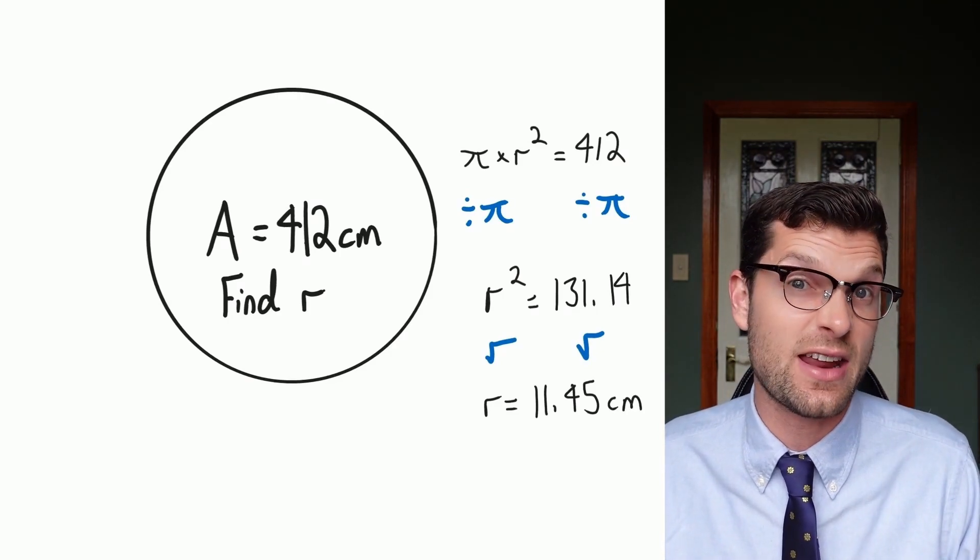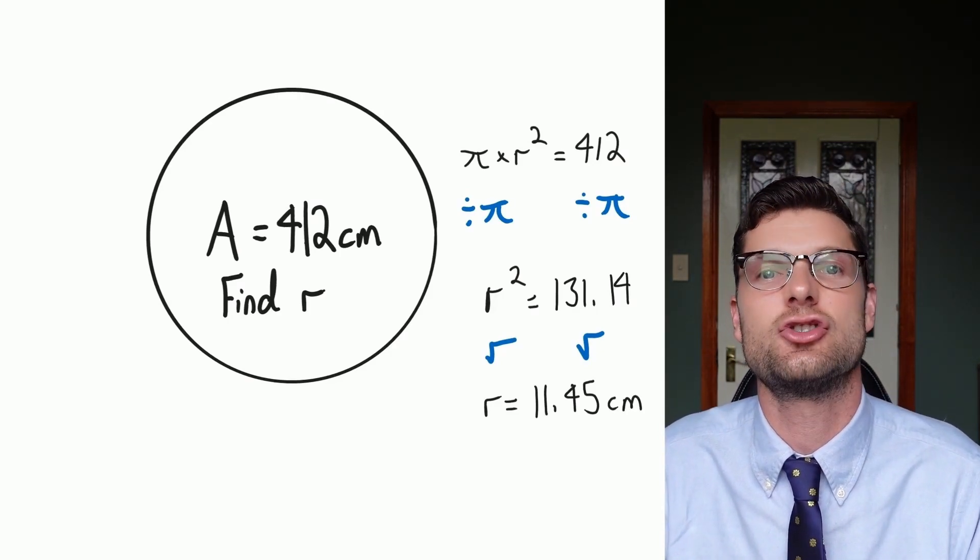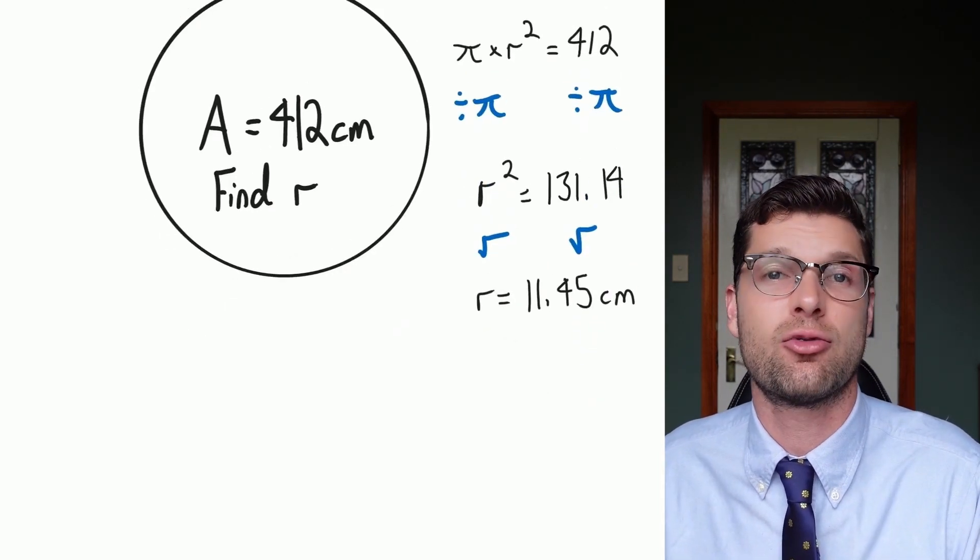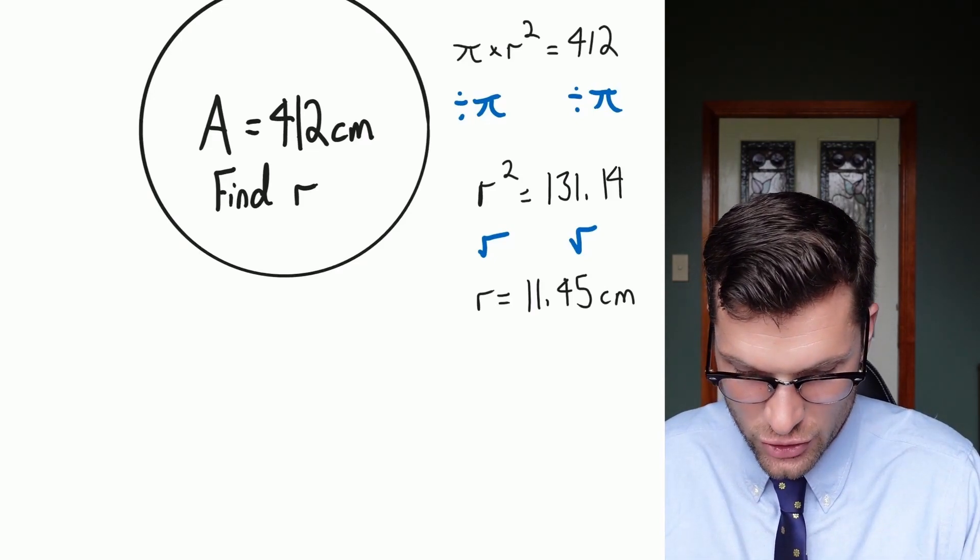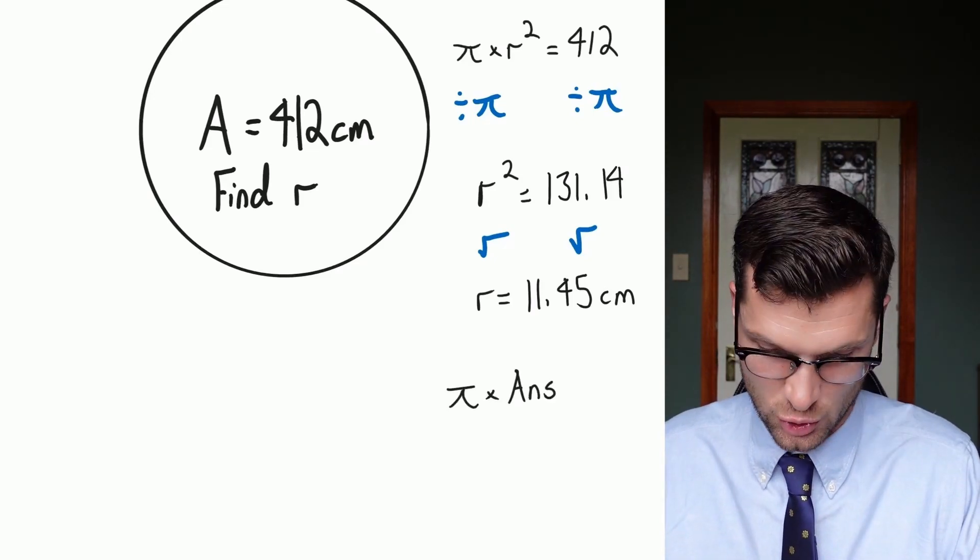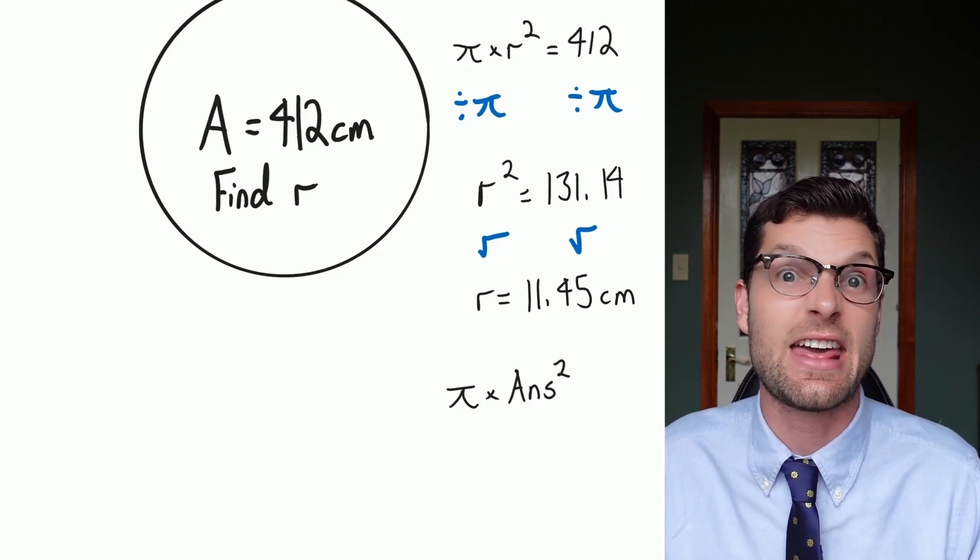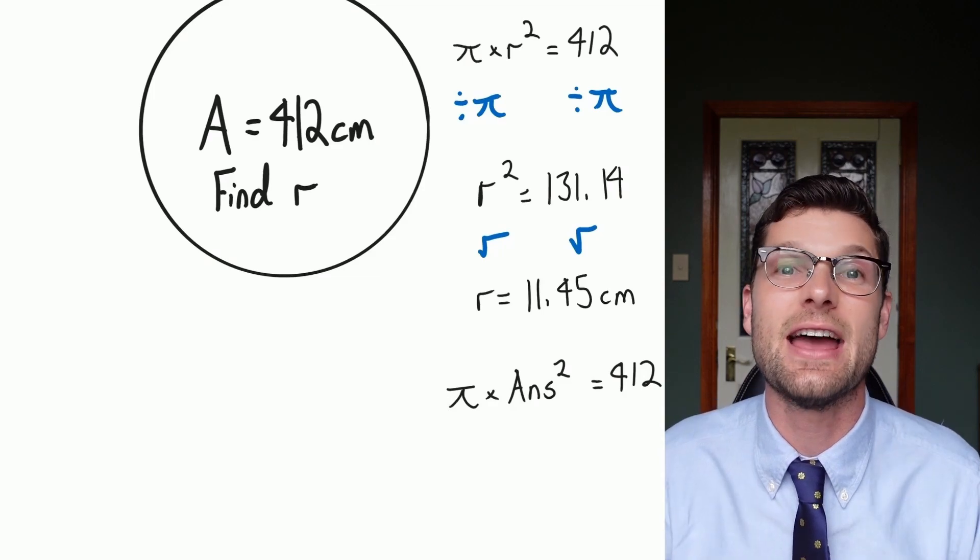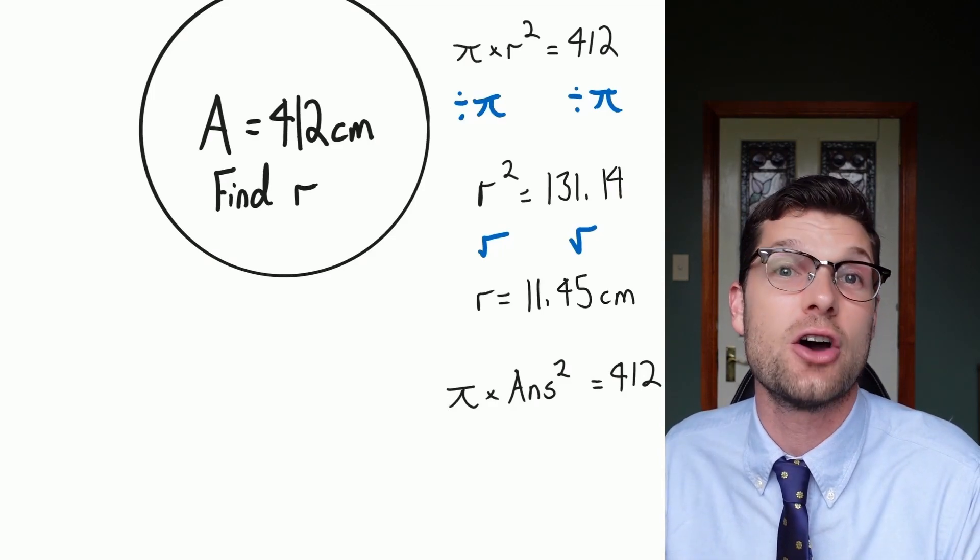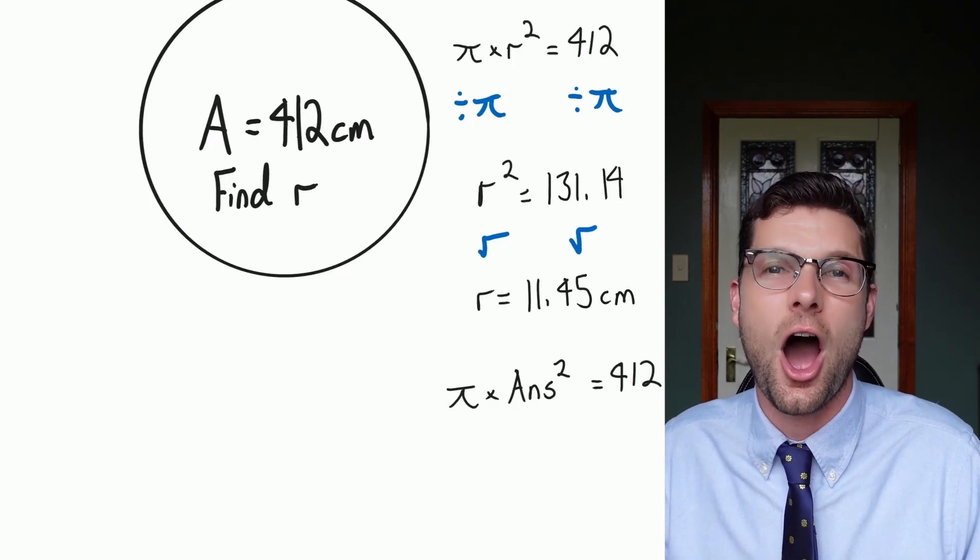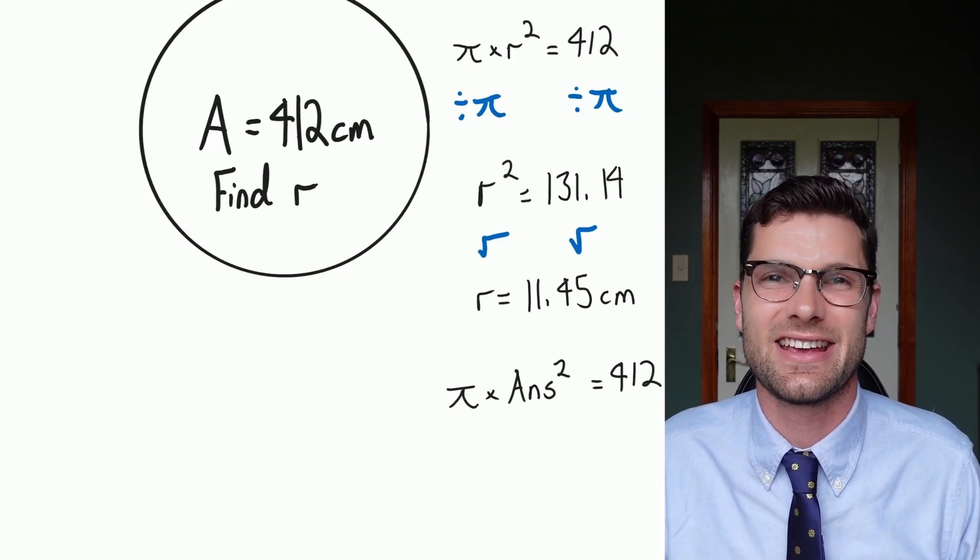So for this one it's not centimeters squared, okay, just making sure we know that it is centimeters. In order to check that we got this right, always a good thing to do, if you just go π multiplied by the answer you were given squared, throw that in your calculator exactly, that'll pop out with 412. Happy days, we know that we got that right because our substitution has checked our working. I hope you guys found this helpful and I'll see you later.